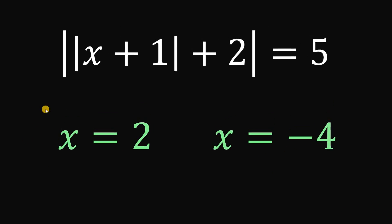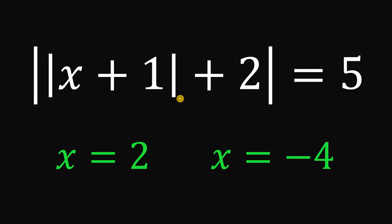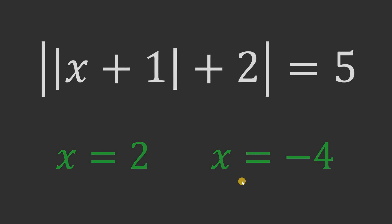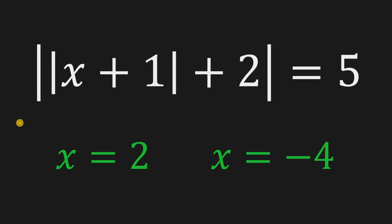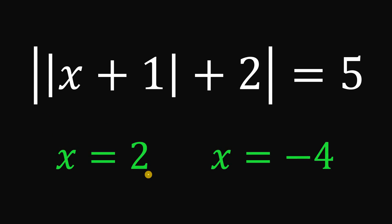Therefore, given the equation — the absolute value of x plus 1, plus 2, equals 5 — we found two possible values of x: x equals 2 and x equals negative 4. The checking confirms 5 equals 5 for both values. So our answer is x equals 2 or x equals negative 4.